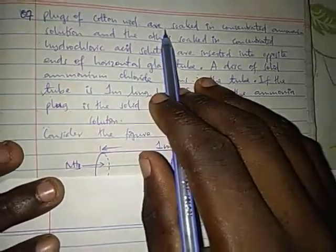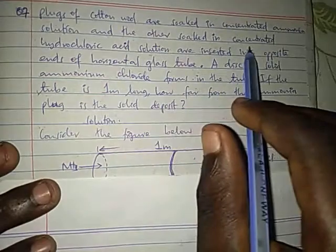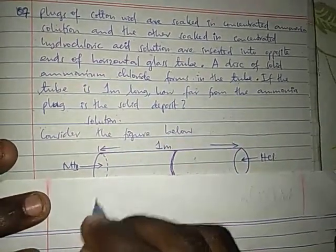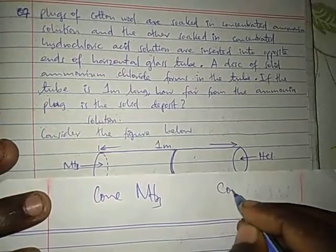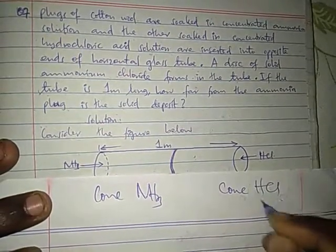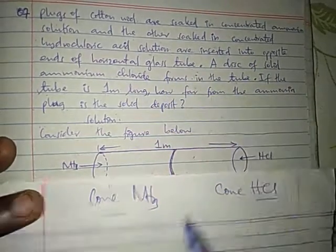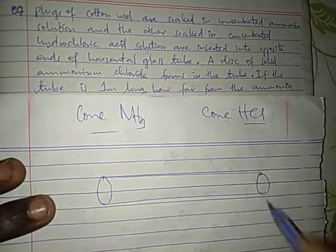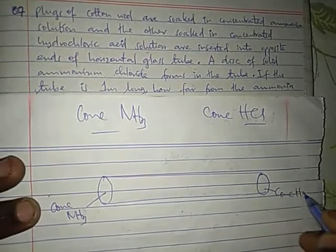So it says: plugs of cotton wool are soaked in concentrated ammonia solution and others soaked in concentrated hydrochloric acid solution. So we have concentrated ammonia and then you have concentrated HCl. After that, they are inserted into opposite ends of a horizontal glass tube. So we have the horizontal glass tube like this. We put concentrated ammonia here, then we put concentrated HCl here.